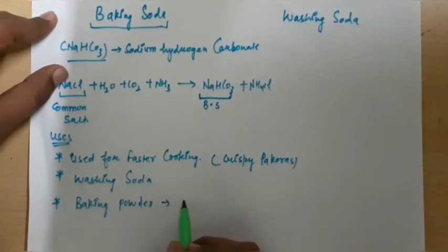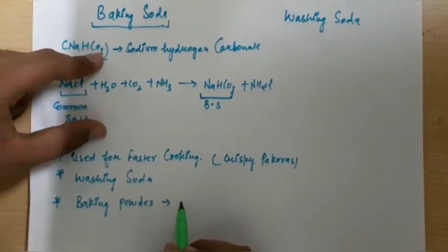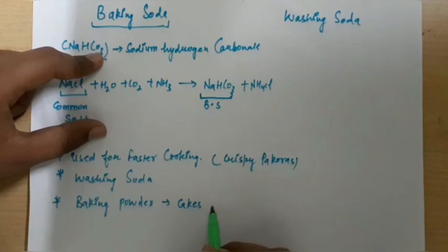Baking powder is a substance used to make cakes, breads, or basically we can call bakery items to be fluffy. Now let us see how does it happen.